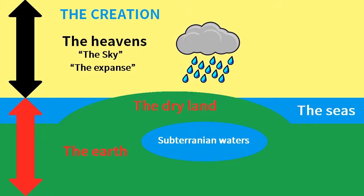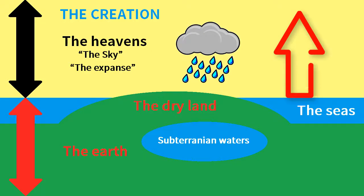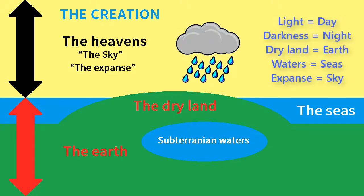The Bible never speaks of a solid dome in the sky. Rather, the expanse is the sky extending upwards from the surface of the earth. Thus Genesis defines its own words by ordinary terms applied to the visible world: light is day, darkness is night, dry land is earth, waters are seas, and expanse is the sky.